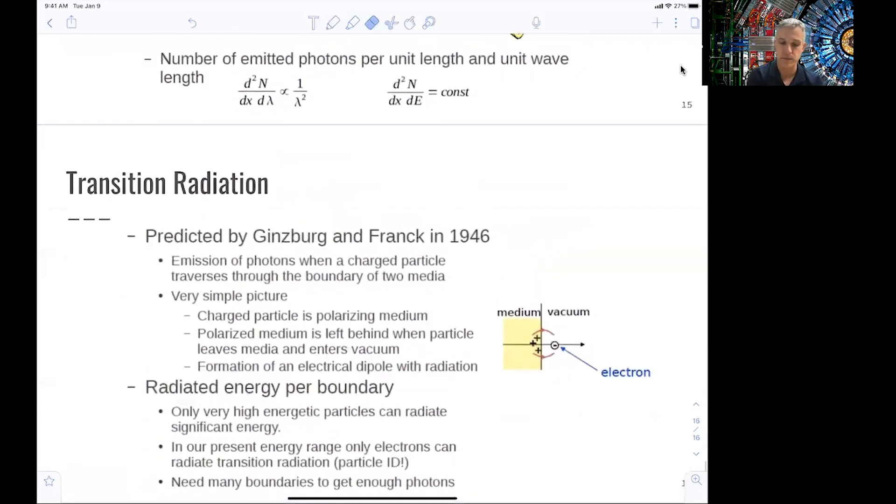And last but not least, transition radiation. This is a process which was predicted by Ginsburg and Frank in the 1940s. Here the idea is that a photon is emitted when a charged particle traverses through a boundary of two mediums. So if you have a medium here in a vacuum, for example, if the particle travels through here, it polarizes the medium when it exits. And then that polarization leads to an electric dipole, which then starts to radiate. And you get a photon from this dipole radiation. So if you measure this type of radiation, you might be able to identify that the particle traveling through the transition of two materials was an electron.